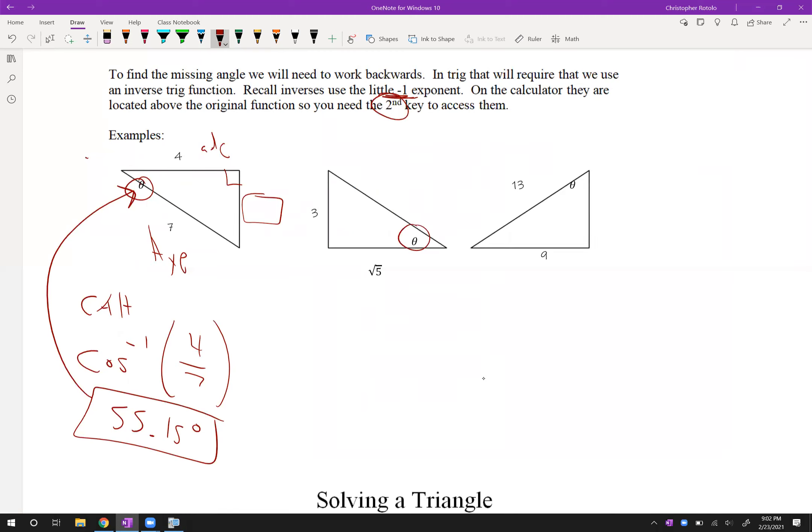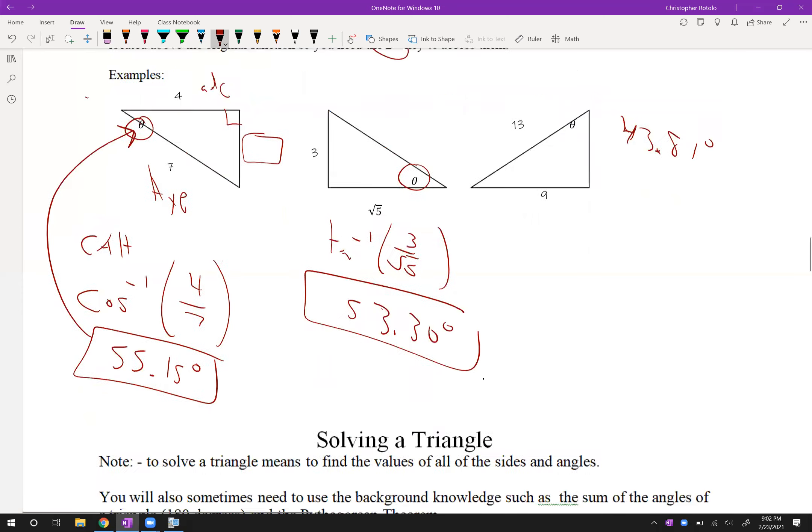Alright, so we'll do the same thing with our other measurements here. I'm going to give you some final answers. So if you want to pause and give these a try, remember this is opposite and adjacent, so tangent, negative first, right? Opposite is 3, square root of 5 for the adjacent, and we should get 53.30 degrees. And our last one, you would end up getting 43.81 degrees. So give that a little bit of time. Make sure you're good with those as well.